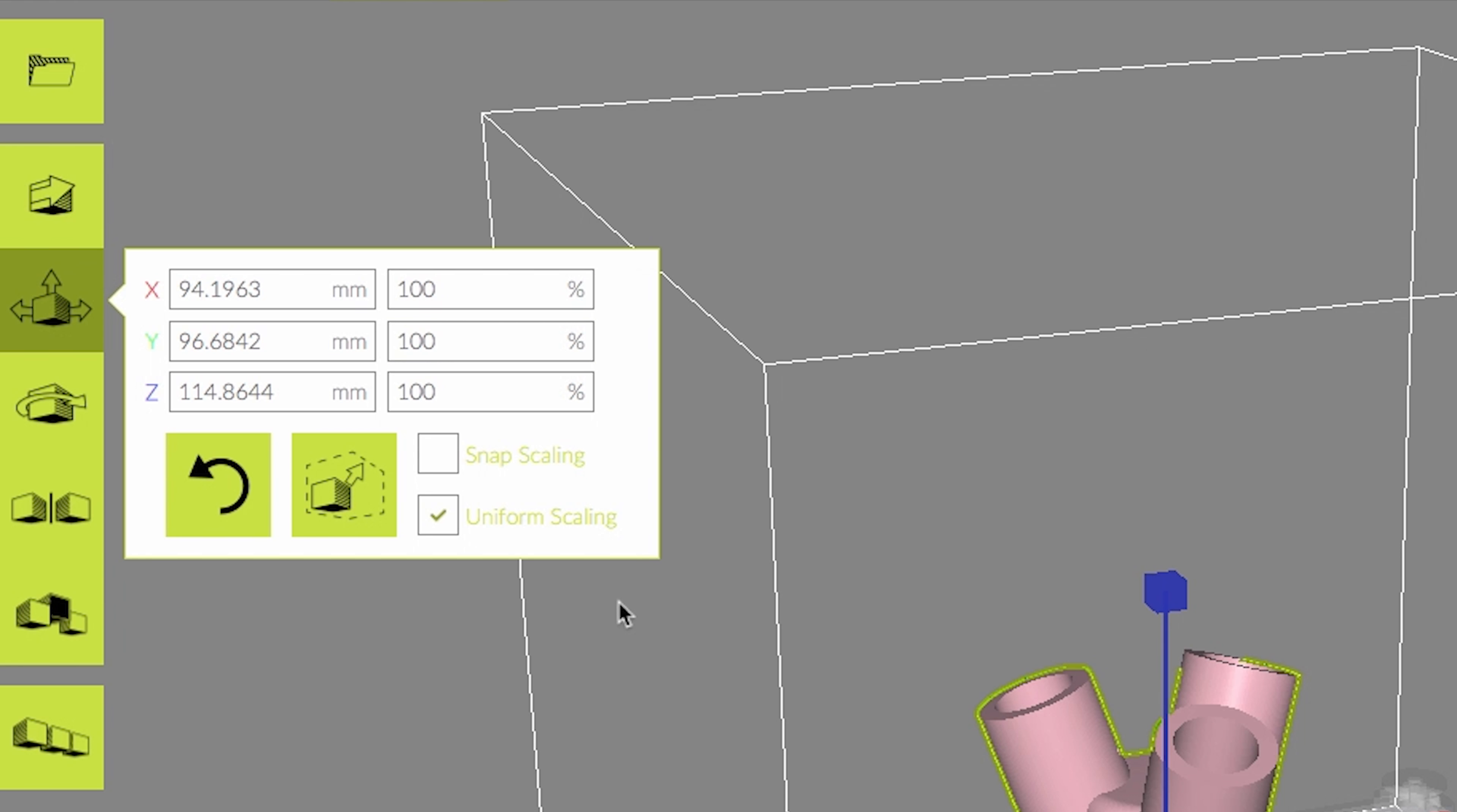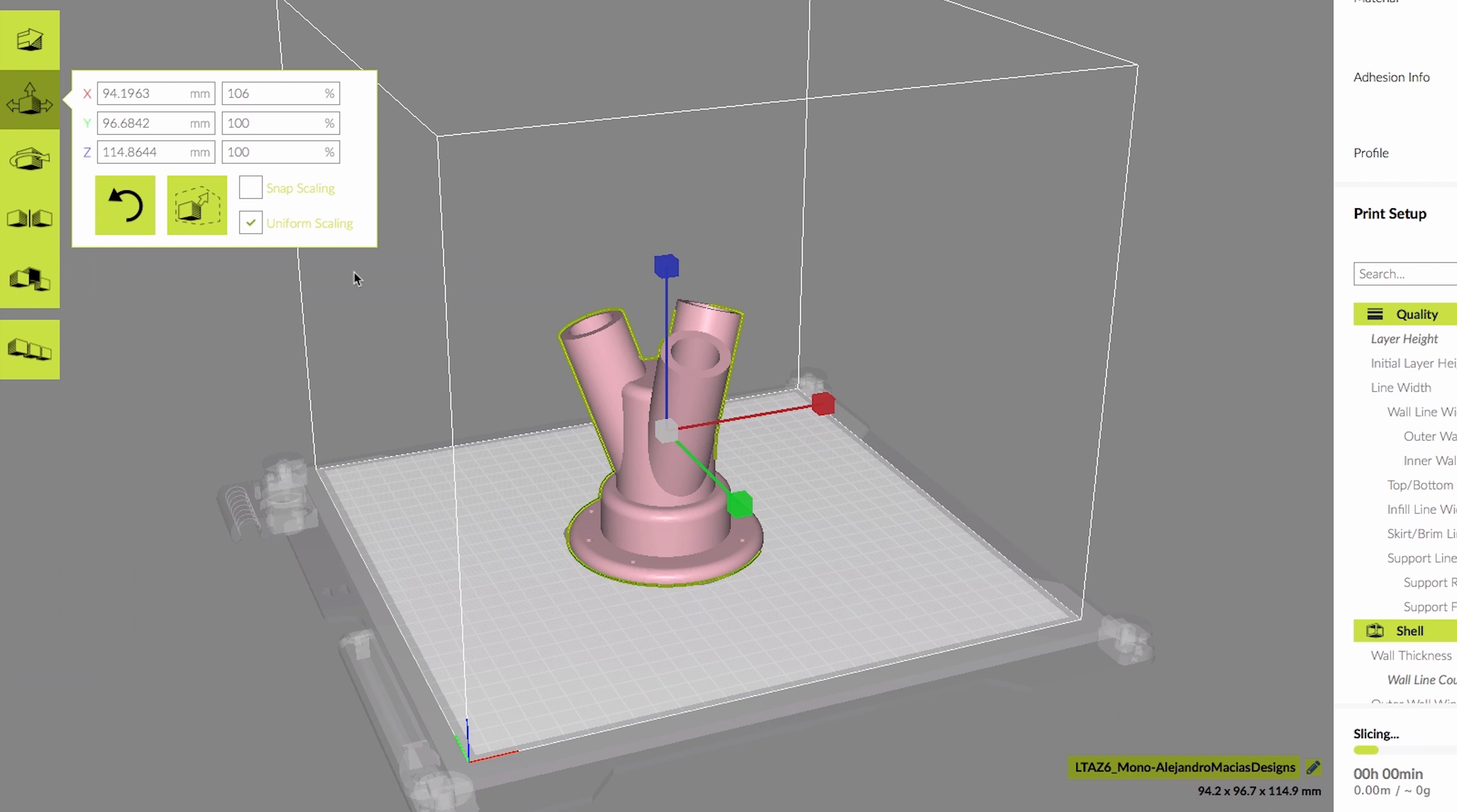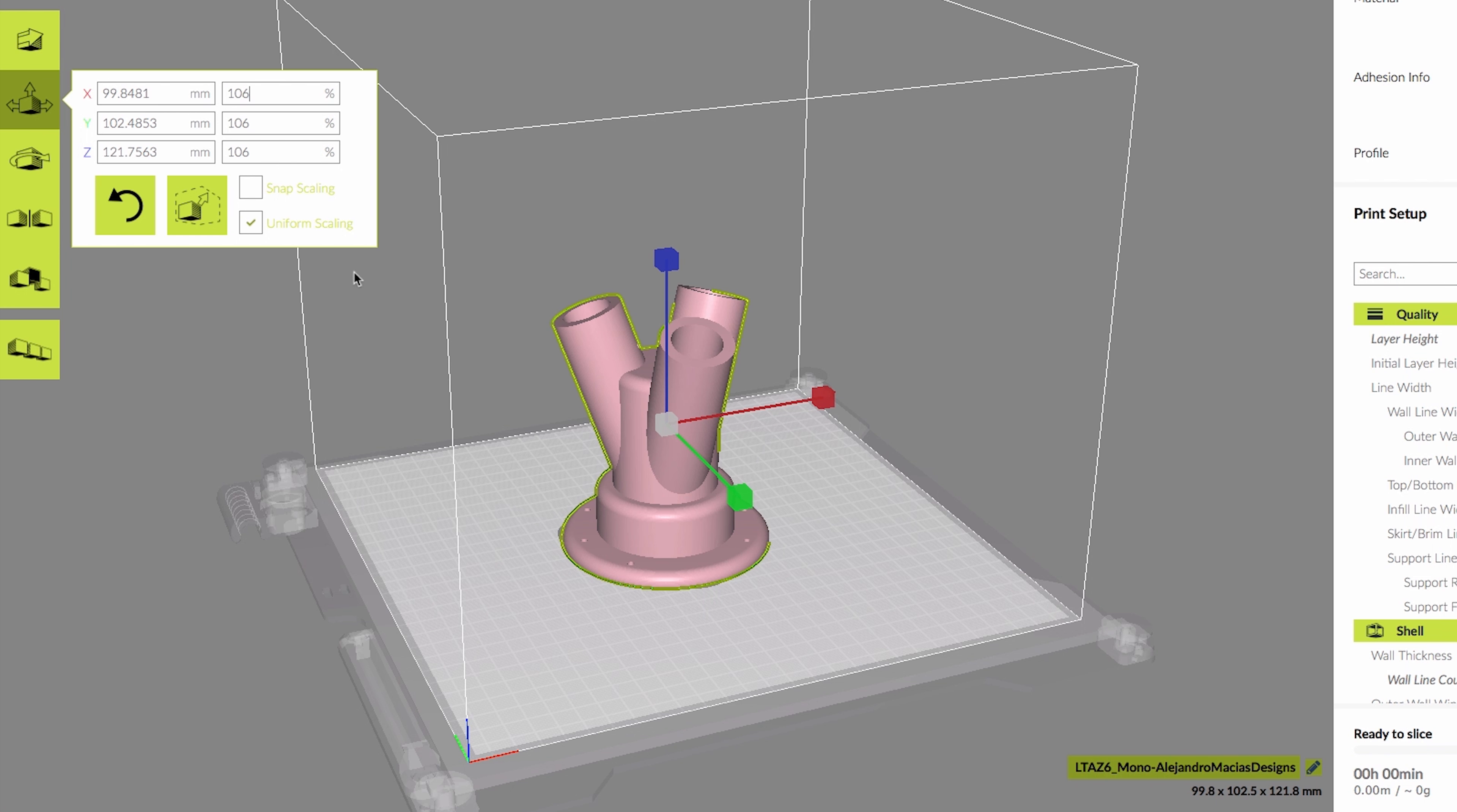Before you do anything else, the first step is to fabricate that 3D printed part. This is the keystone of the design, so getting it right is crucial. Once you've downloaded the model and loaded it into your slicer, you'll want to scale up the part to about 106% of the original size. This is super important because it'll ensure that the dowel rods fit into the holes easily.